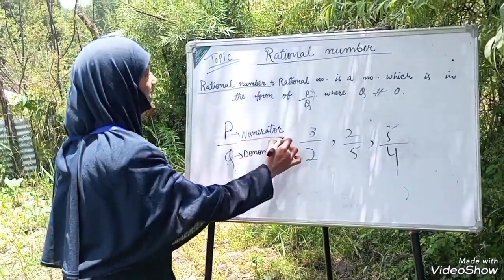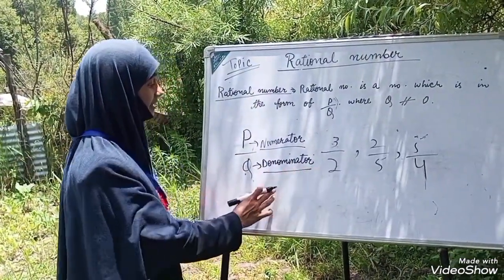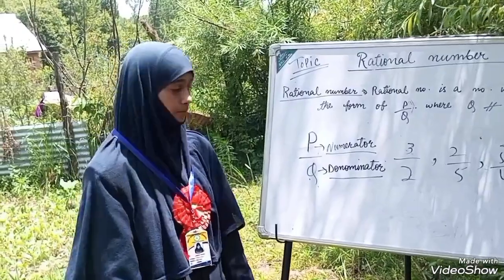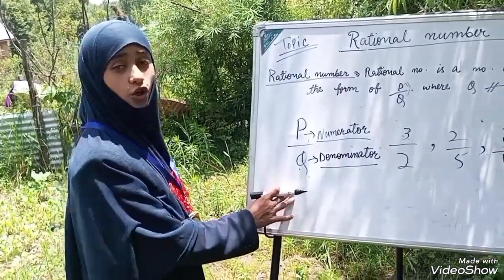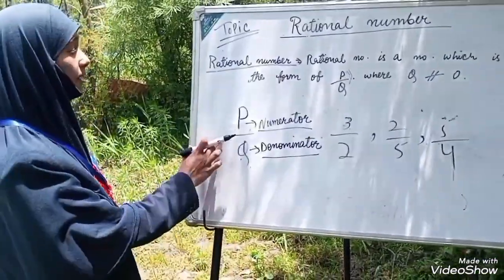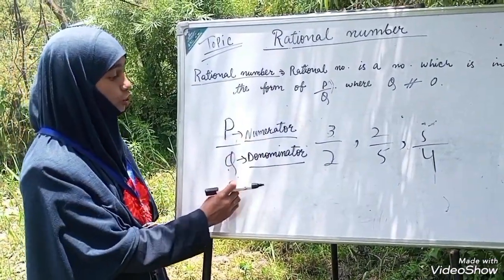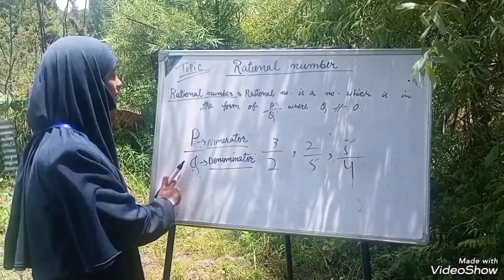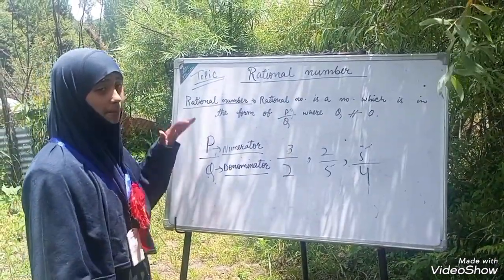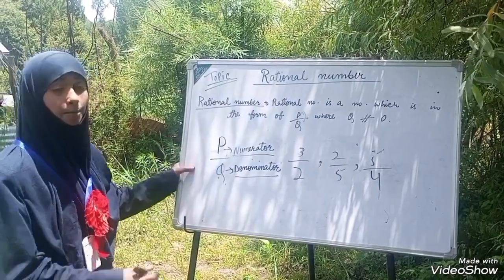Now, what is P and what is Q? We call them numerator and denominator. P is the upper part of the fraction and Q is the lower part of the fraction.